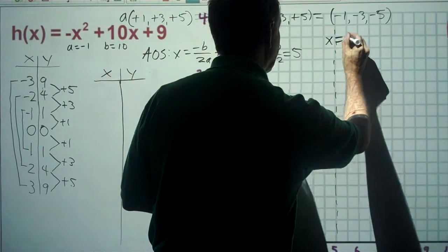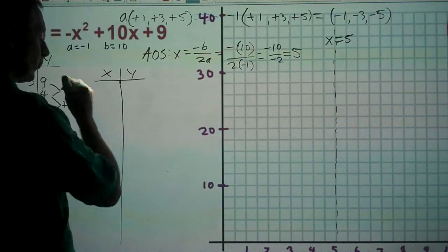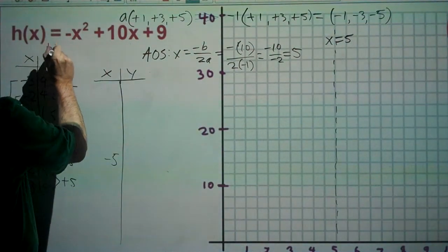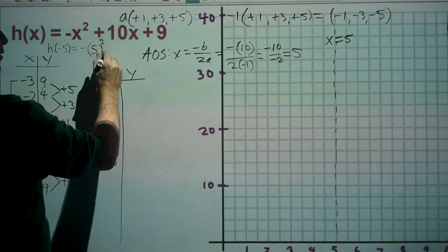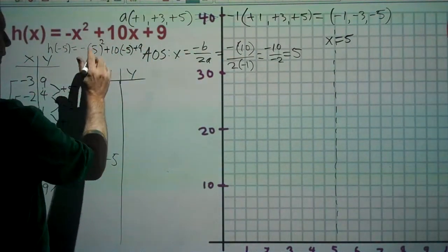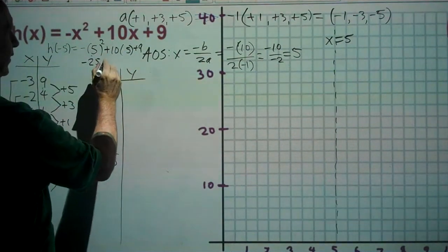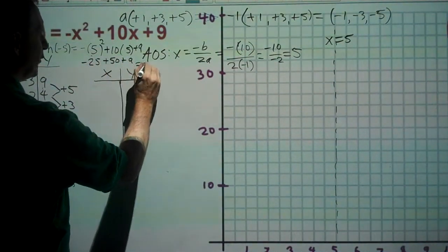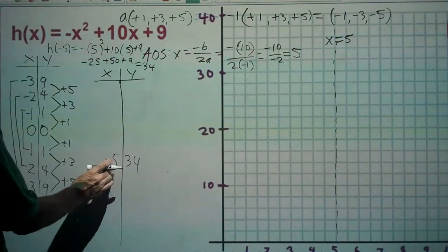We plug x equals five into the function: h(5) = −(5)² + 10(5) + 9 = −25 + 50 + 9 = 34. So our vertex is at (5, 34). Note: the speaker initially says negative five but corrects to five. Using our step pattern of minus one, minus three, minus five from 34.